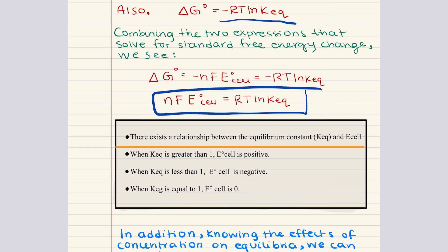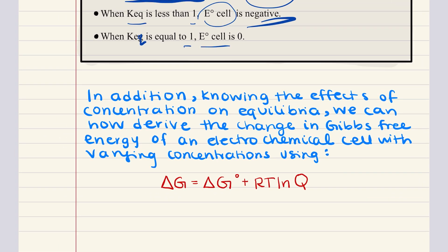When KEQ is greater than 1, E0 cell is positive. When KEQ is less than 1, E0 cell is negative. When KEQ equals 1, E0 cell is 0. This equation provides a direct link between the spontaneity of an electrochemical reaction, the cell potential, and the position of equilibrium. Knowing the effects of concentration on equilibria, we can derive the change in Gibbs free energy of an electrochemical cell with varying concentrations, where delta G is the free energy change under non-standard conditions, delta G0 is the free energy change under standard conditions, R is the ideal gas constant, T is temperature, and Q is the reaction quotient.